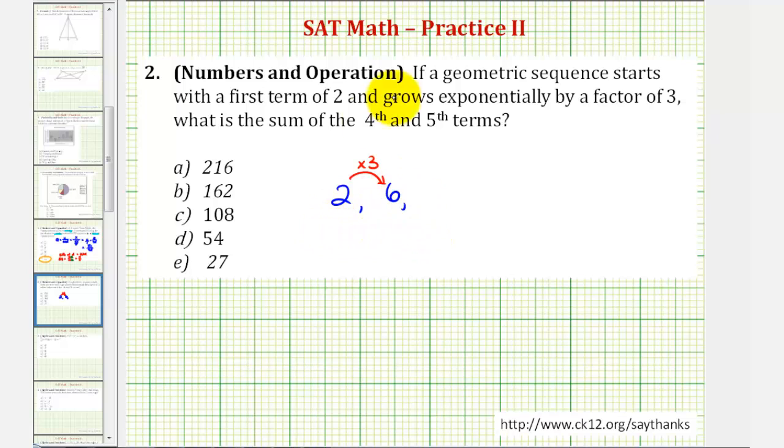Let's continue this pattern until we find the fourth and fifth term. So now we'll multiply by three again to find the third term, and six times three is equal to eighteen. The third term is eighteen.